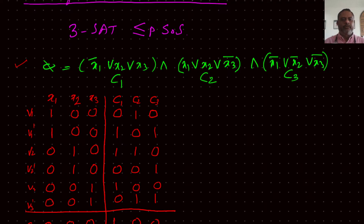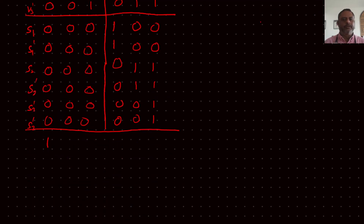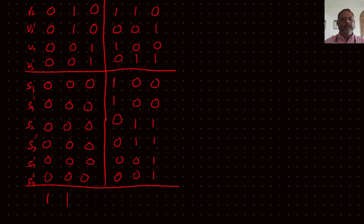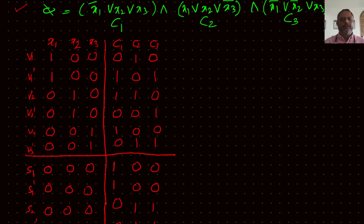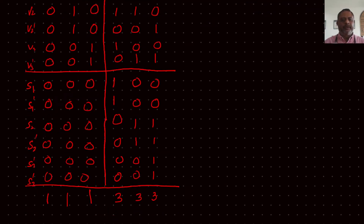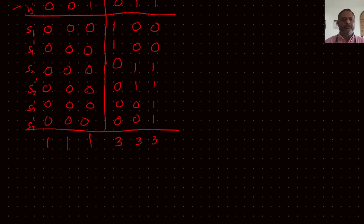The first condition for this to work is that X1 can be either 1 or 0, not both. Therefore the Xi columns must add up to 1. Same way X2 can be 0 or 1, so they add up to 1. For the clause columns, there are 3 clauses, so C1, C2, and C3 should each add up to 3. We must select rows so that these totals are achieved.